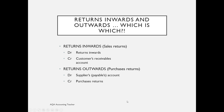Sometimes goods are returned to suppliers — we have returns outwards going back to our suppliers — and customers will also return goods to us, which we call sales returns or returns inwards. To deal with this, we set up a separate returns inwards or sales returns account that behaves in the opposite way to the sales account. Whereas the sales account always has credit entries, the sales returns account will always have debit entries. We must keep them separate and not put debits in the sales account.